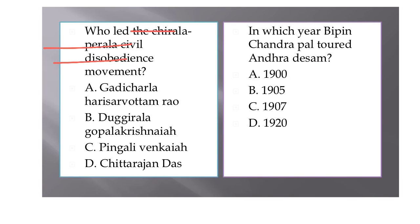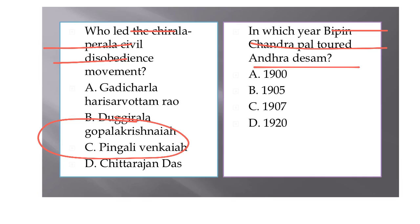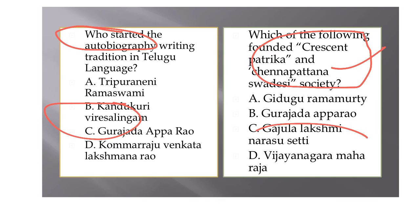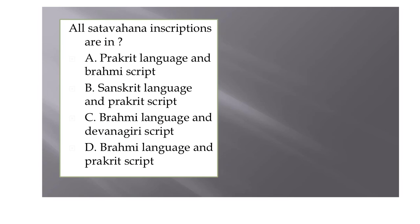The Chirala-Perala civil disobedience movement was led by Duggirala Gopalakrishnayya. Bipin Chandra Pal toured Andhra Desam in the famous year of 1907. The tradition of writing autobiography in Telugu was started by Kandukuri Veeresalingam. The Krishna Patrika and Chandrapatnam Swadeshi Society were established by Gazula Lakshminarasu Setti. Finally, the Satavahana inscriptions were written in Prakrit language in Brahmi script — a very important and frequently asked question.